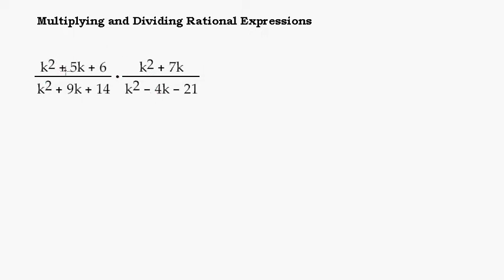When we're talking about rational expressions, we're talking about fractions, usually that have variables in them, as you see here. So our first fraction is k squared plus 5k plus 6 all over k squared plus 9k plus 14. And we're going to multiply that by a second fraction, k squared plus 7k over k squared minus 4k minus 21.